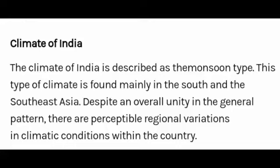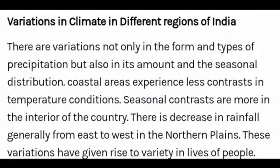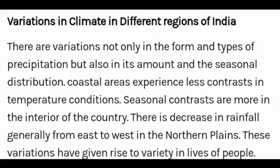India faces many climatic conditions within the country. The variations exist not only in the form and types of precipitation but also in its amount and seasonal distribution. Coastal areas experience less contrast in temperature conditions, while seasonal contrast is more in the interior of the country. There is a general decrease in rainfall from east to west in the northern plains, and these variations have given rise to variety in the lives of people.